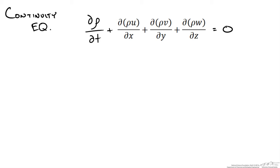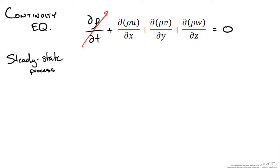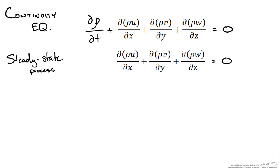Now there are a couple of different things we could do. First off, if we have a steady state process — so our fluid is flowing at steady state — no accumulation or depreciation of mass occurs in our control volume. So there is no change of mass with time, hence this first term is zero, and the continuity equation becomes the following.